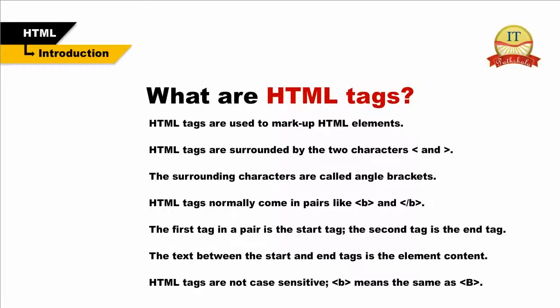What are HTML tags? HTML tags are used to mark up HTML elements. HTML tags are surrounded by two characters: the opening angular bracket and the closing angular bracket. HTML tags normally come in pairs, like an opening b tag and a closing b tag. The first tag in a pair is the start tag and the second is the end tag. The text between the start and end tags is the element content. HTML tags are not case sensitive, so a lowercase b inside angular brackets means the same as an uppercase b.